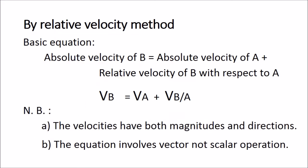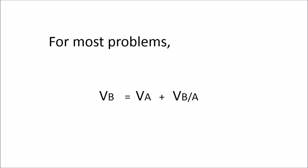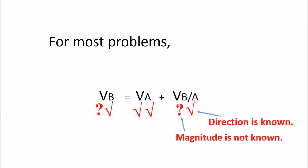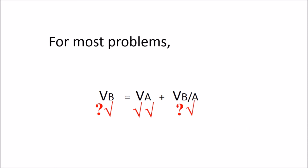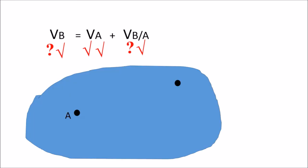For most of the problems that we will encounter, the velocity of A is given — we know its magnitude and direction. We have to find the magnitude of the velocity of B; we do not know its magnitude, but we know its direction. We also do not know the magnitude of the relative velocity of B with respect to A, but we know its direction.